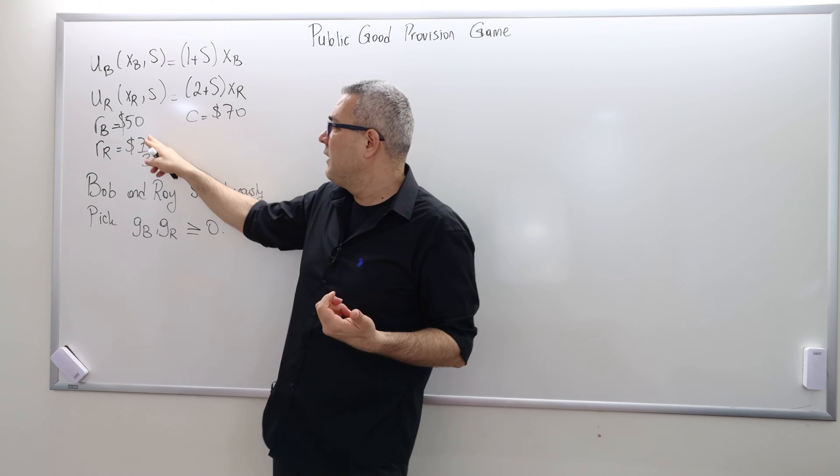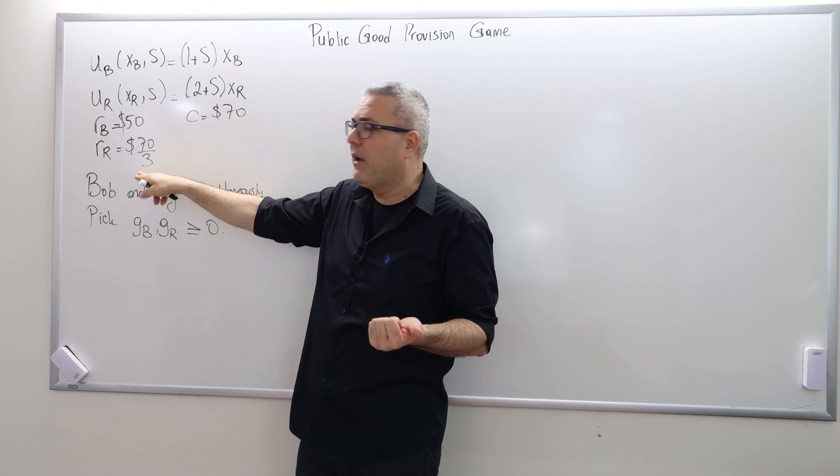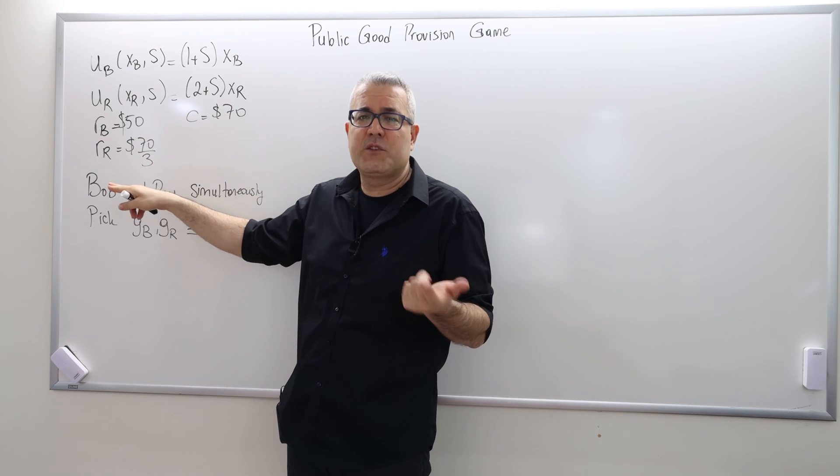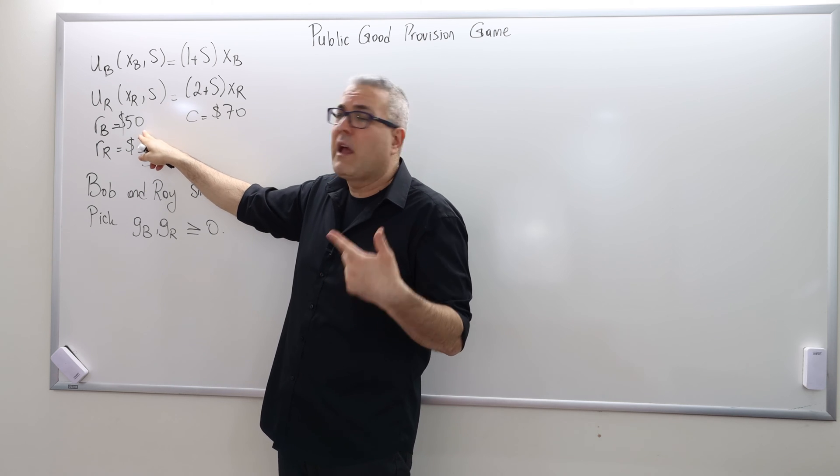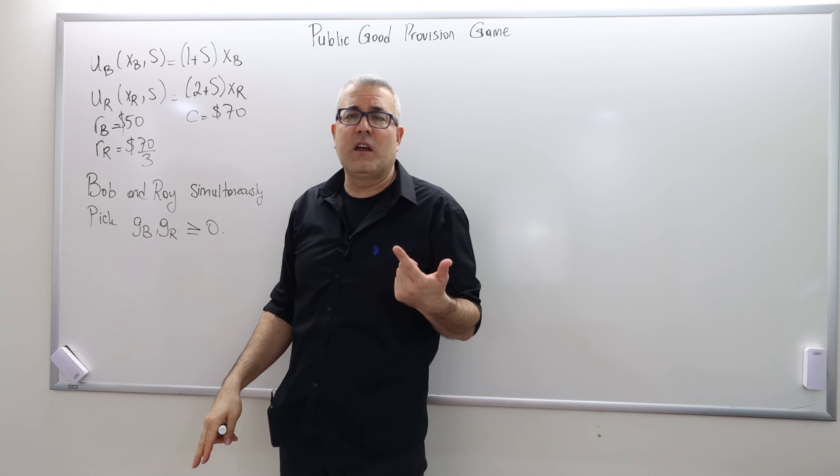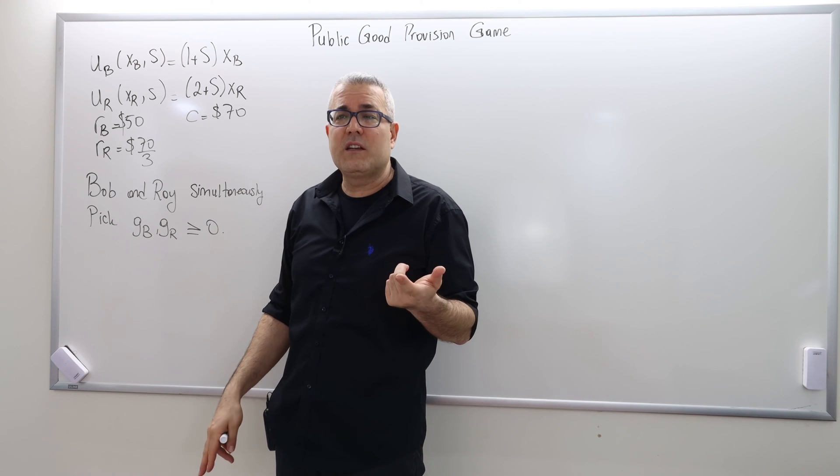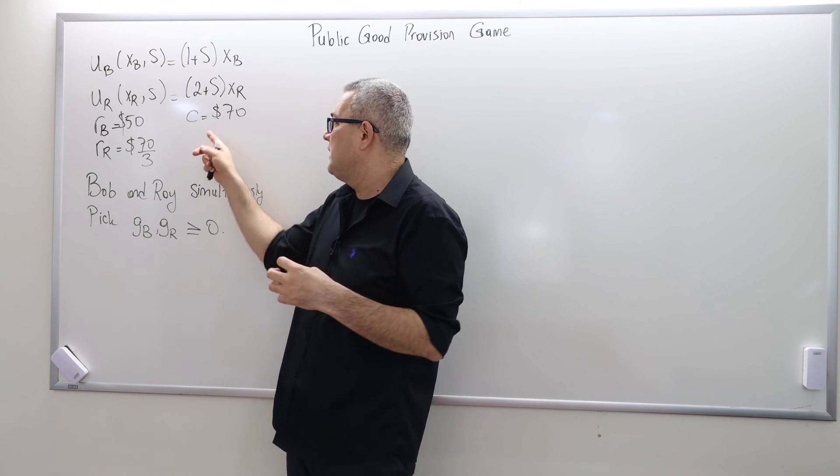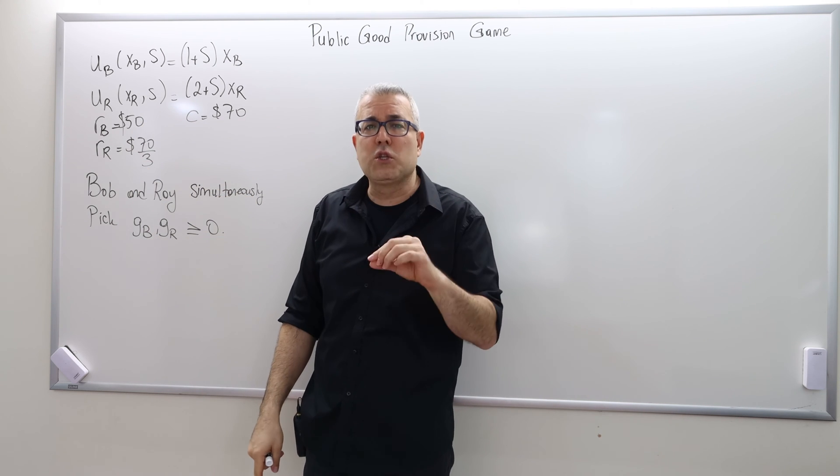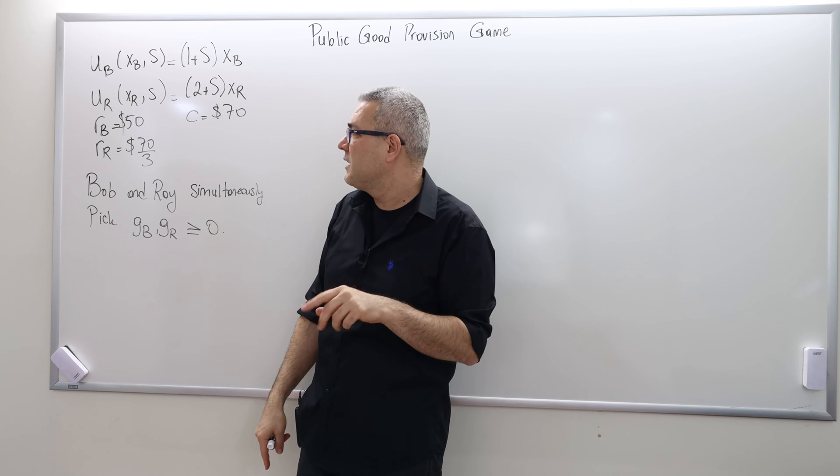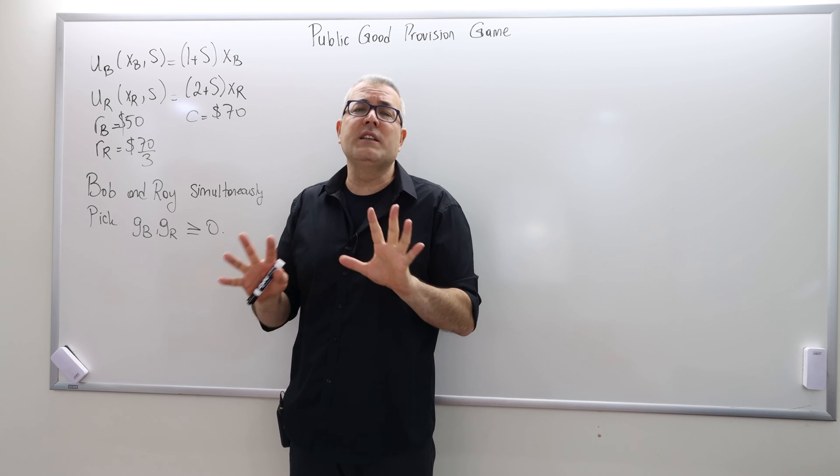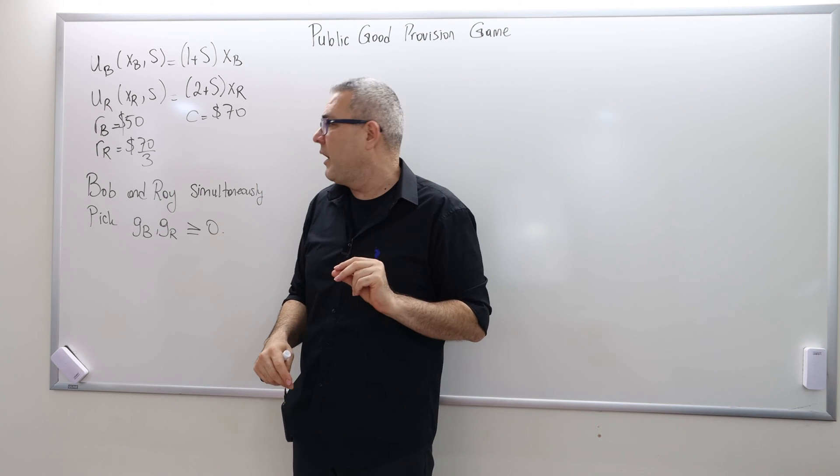One example was Bob pays $50, Ray pays $20. Another example, Bob pays $40, Ray pays $30, or another example Bob pays $48, Ray pays $22. So the sum is always equal to $70, but the contributions for Bob and Ray are always lower than their reservation prices. So there are infinitely many possible such ways of dividing the cost between Bob and Ray.